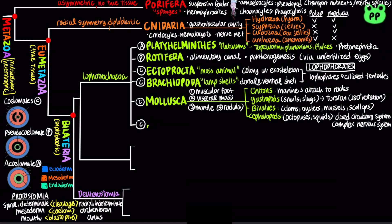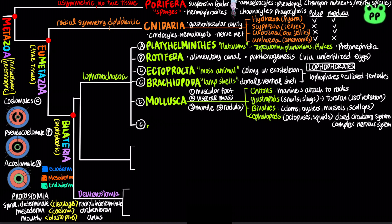Another phylum belonging to Lophotrochozoa is Annelida, which are coelomates with bodies composed of a series of fused rings. The phylum Annelida is divided into three classes. Polychaetes, also known as bristle worms, are marine annelids.